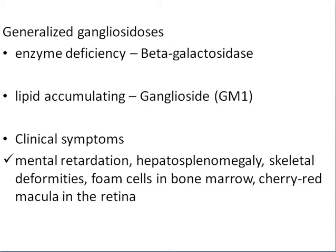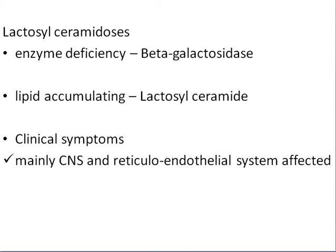GM1 gangliosidosis involves a deficiency of beta-galactosidase, with accumulation of GM1 gangliosides. Clinical symptoms include mental retardation, hepatosplenomegaly, skeletal deformities, foam cells in bone marrow, and changes in the mucosal retina.